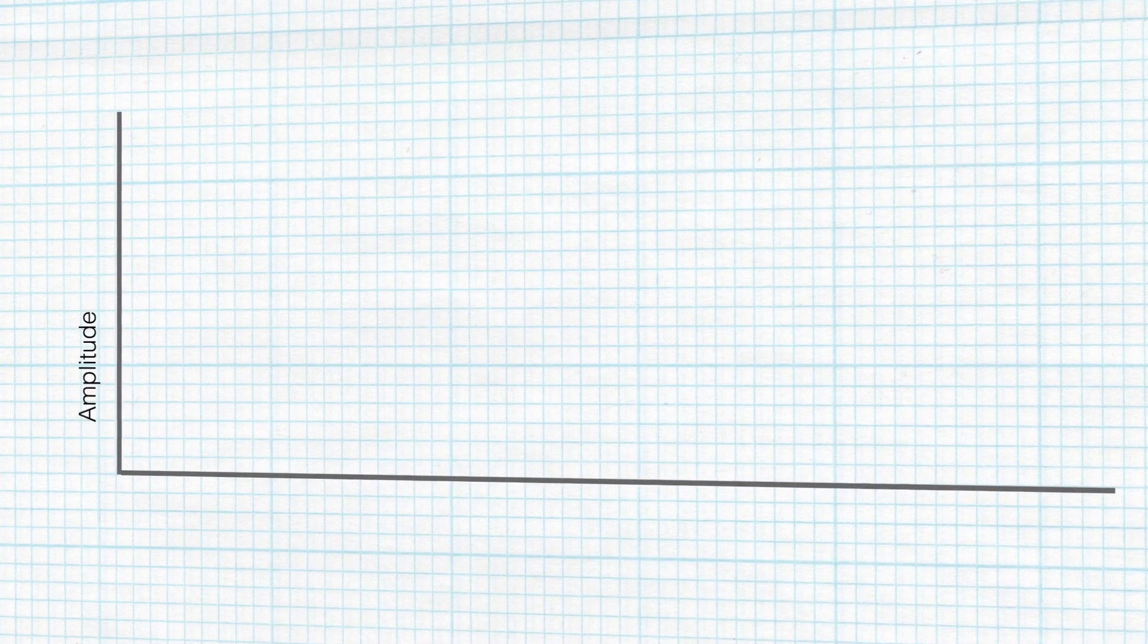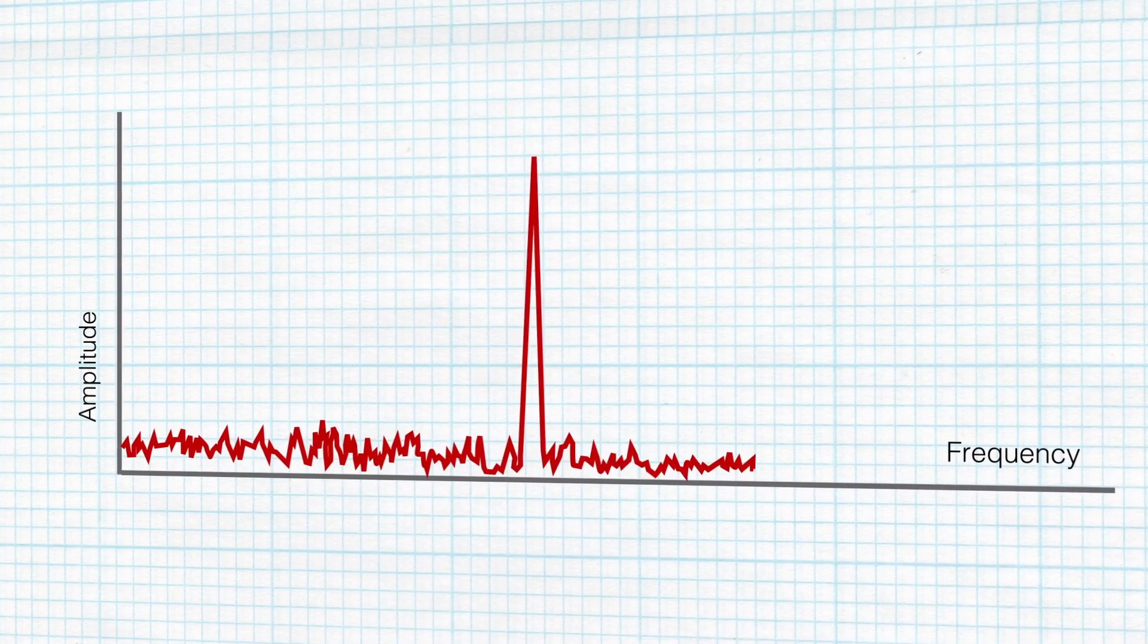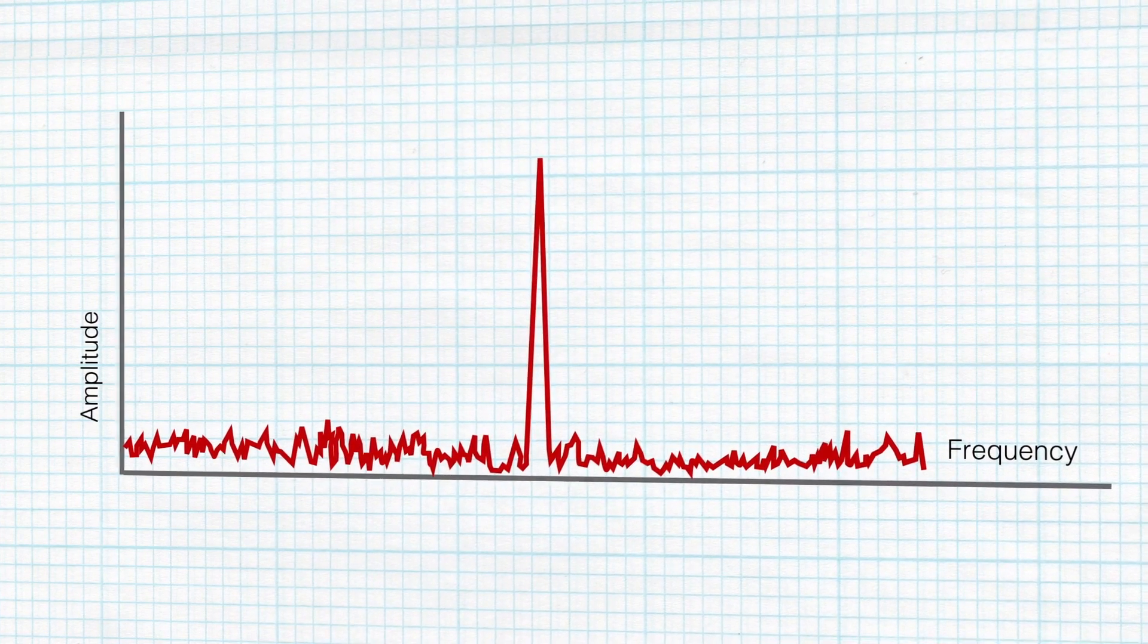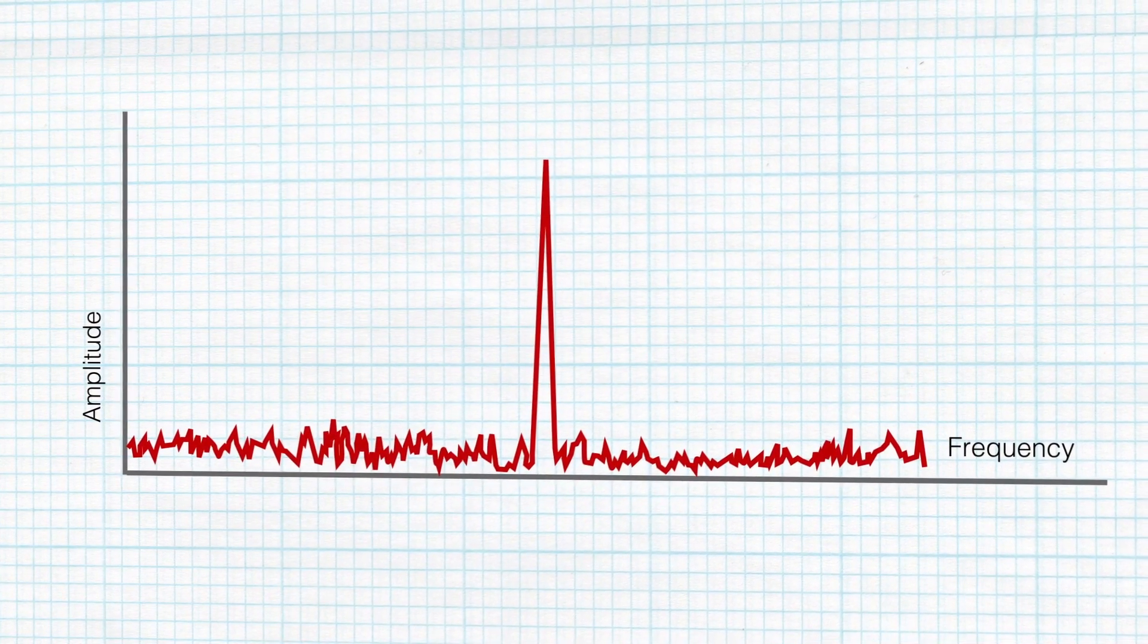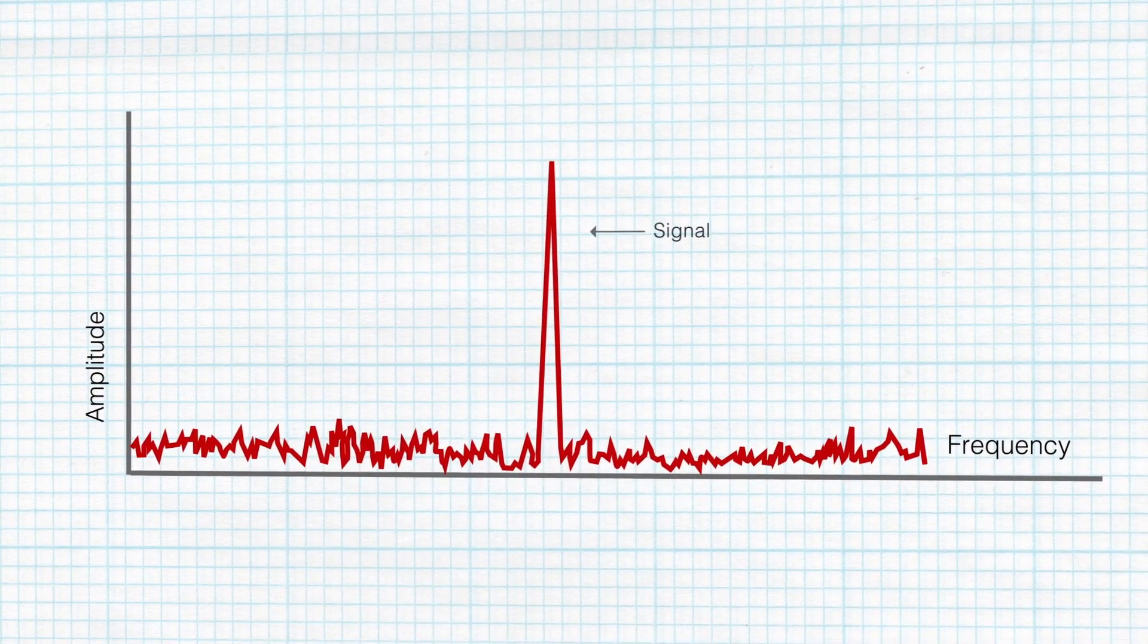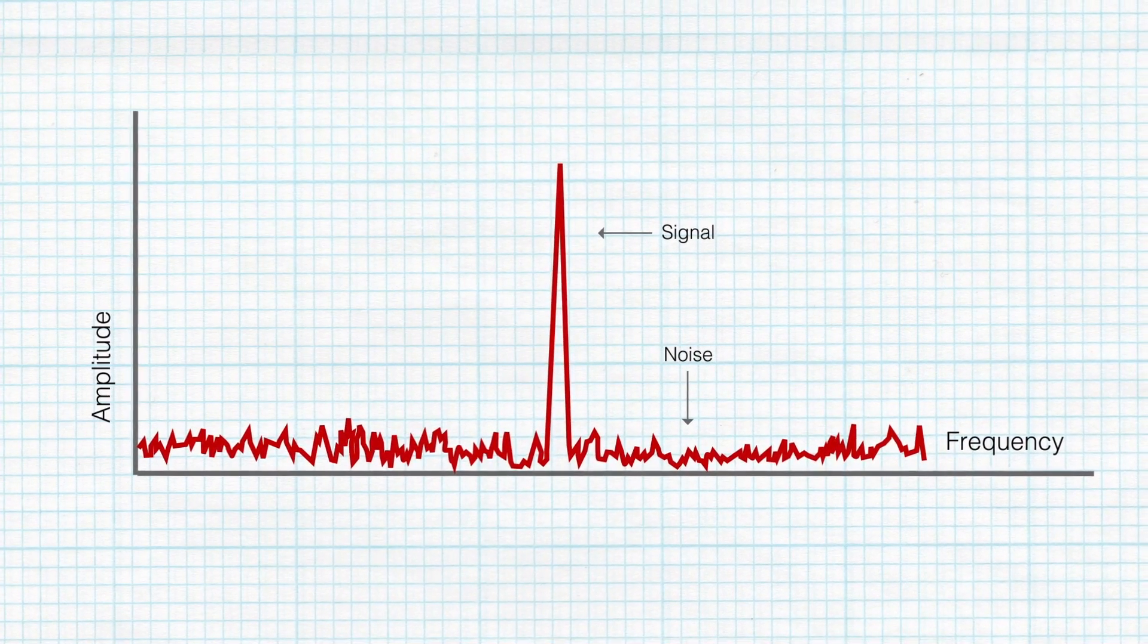But it's also interesting to look at the spectrum of a square wave. Here we look at what signals are present, plotting amplitude on the vertical scale and frequency on the horizontal scale. Just like tuning a radio over a band of frequencies and plotting the level of the output for each frequency.